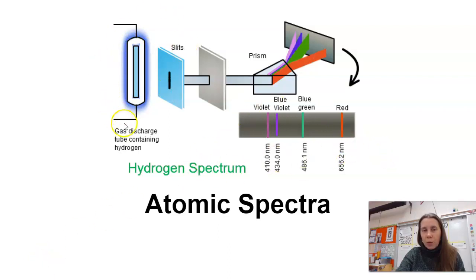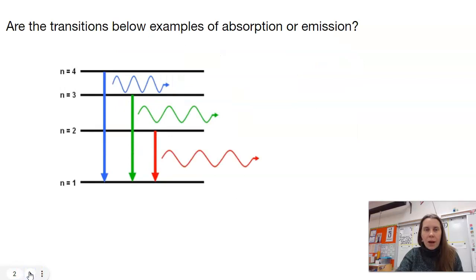For example, here we have a sample of hydrogen atoms. If you run it through a prism, it separates out and you get four distinct lines, which we will look at in the lab.